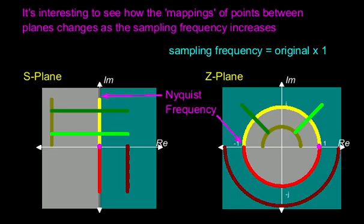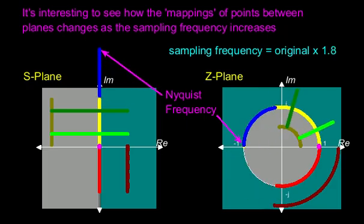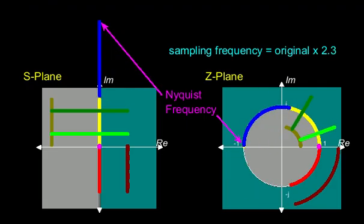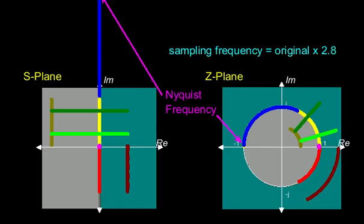Let's consider what happens to the mappings between counterpart points for increasing sampling frequencies. The Nyquist frequency remains fixed at the position minus 1 on the Z plane, but moves away from the origin on the S plane.